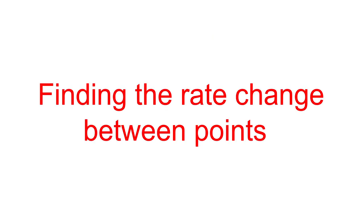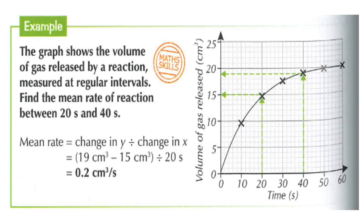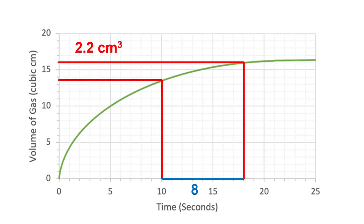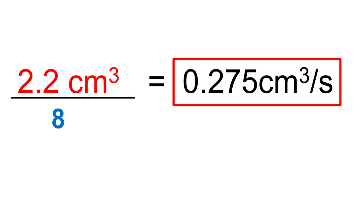They might also ask you to find the mean rate of reaction between two points on a graph. In this case you don't need the tangent — just find the difference between the two values. For example, to find the mean rate between 10 and 18 seconds: read off the values at each point — 16 and 14.8 — giving a difference of 2.2. The time difference is 8 seconds. So 2.2 ÷ 8 = 0.275 cm³ per second.